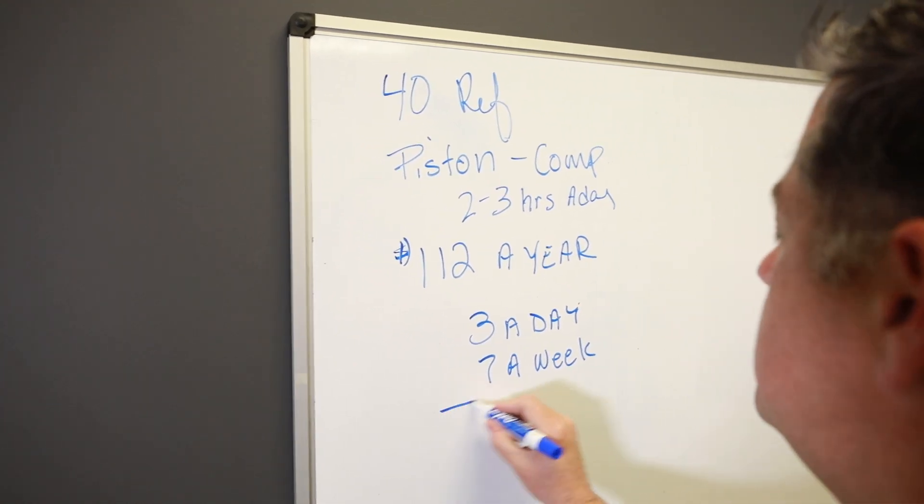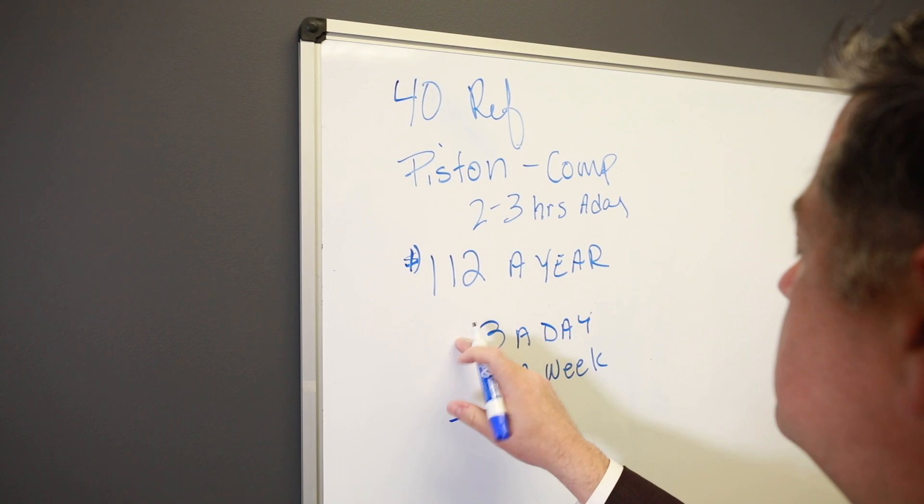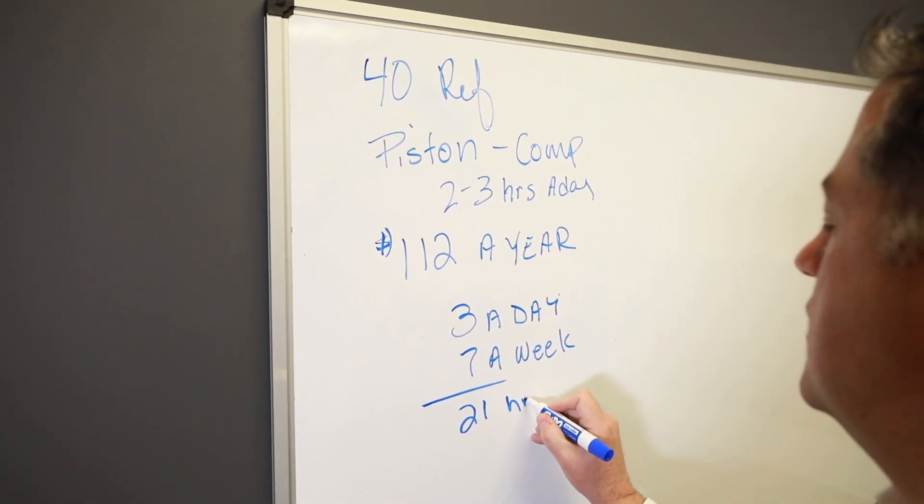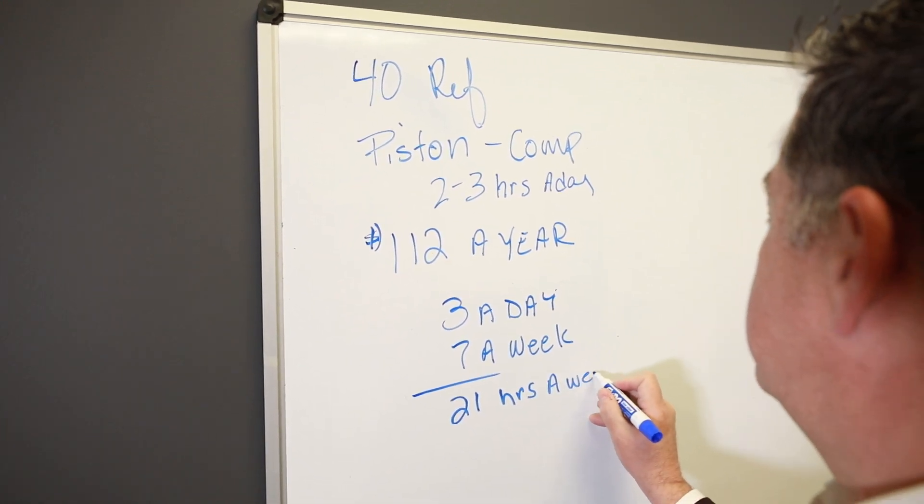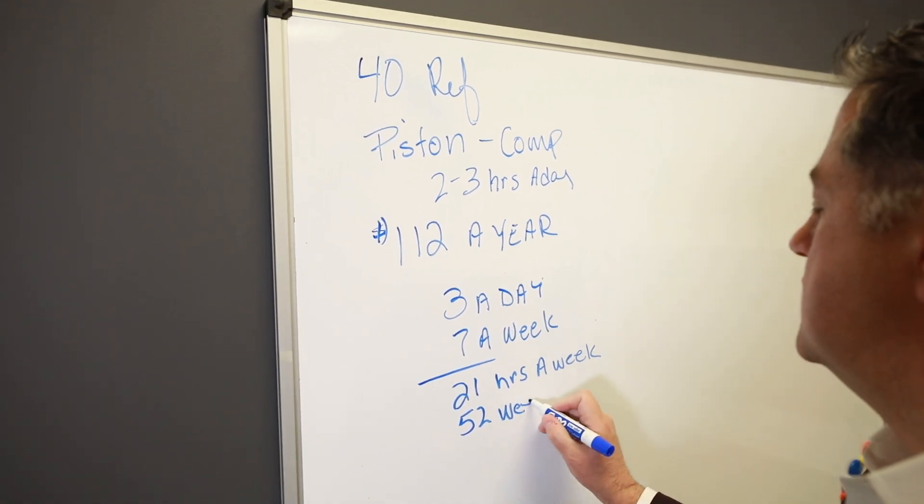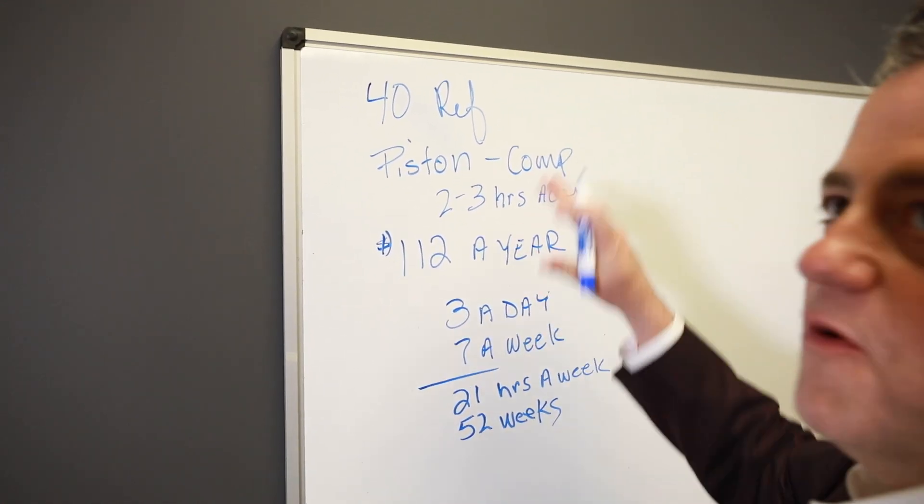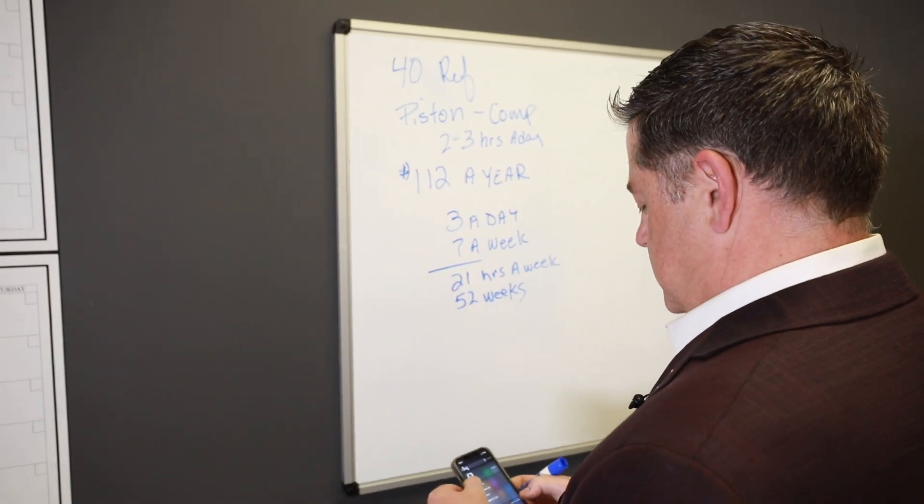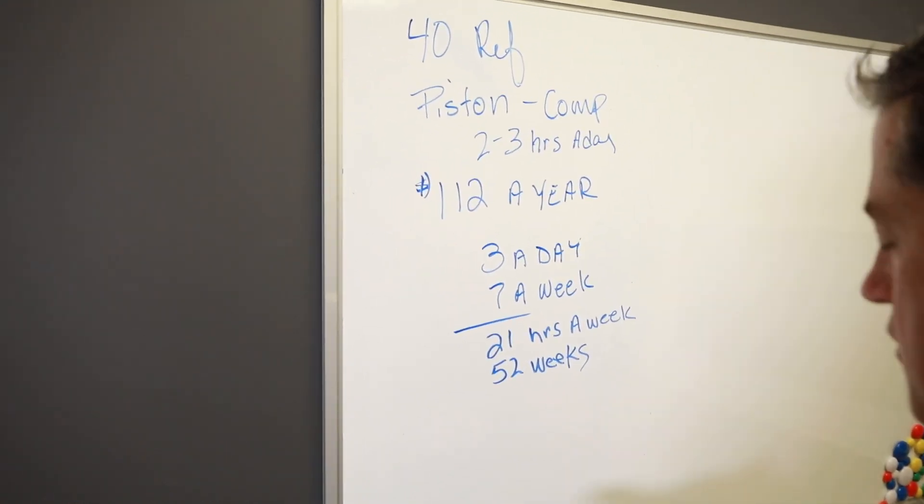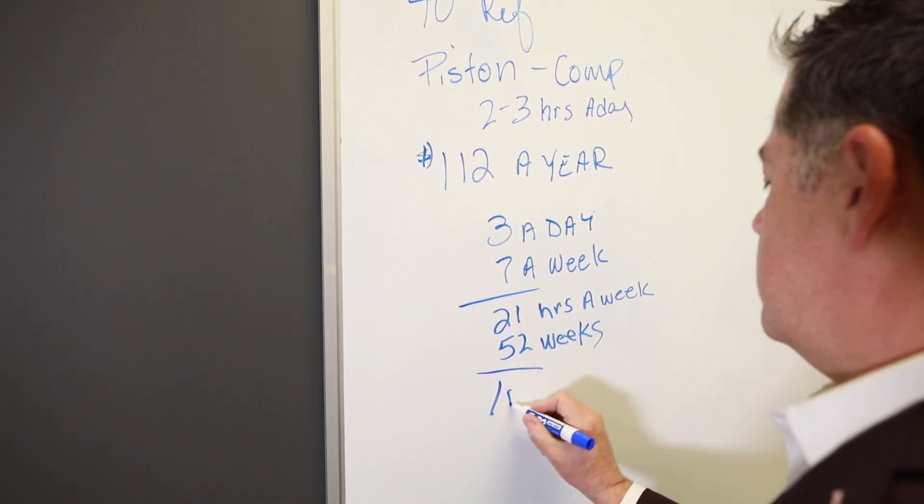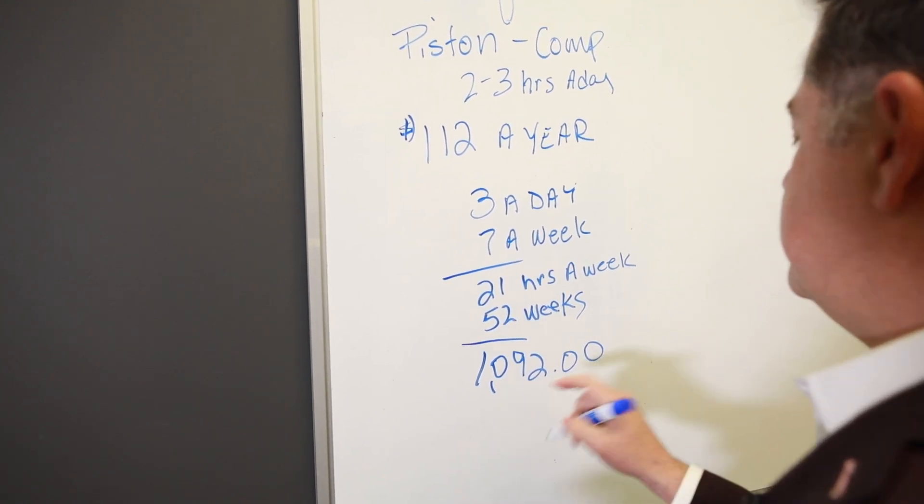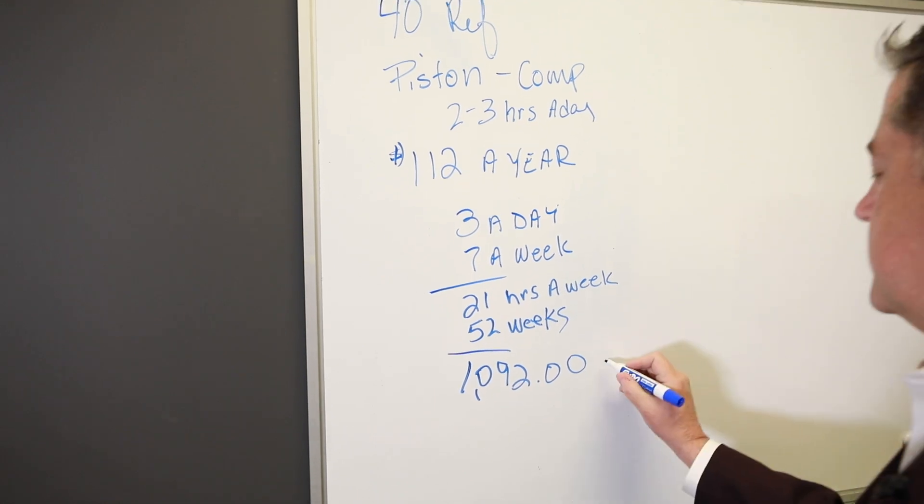That would be three hours a day, seven days a week. You're at 21 hours a week times 52 weeks. My writing's going all over the board, we're just having fun with this. So I'm going to pull out a calculator, 21 times 52. So that refrigerator yearly is going to run 1,092 hours a year.